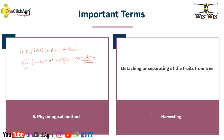The second terminology is Harvesting — it means detaching or separating of fruits. It is a very simple definition of harvesting.